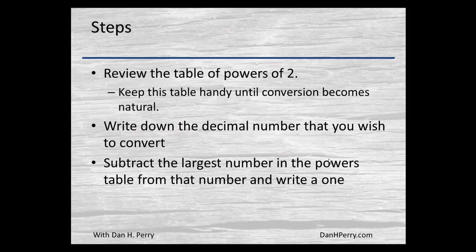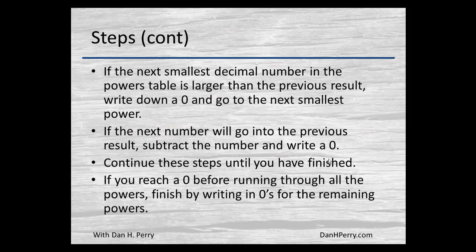Write down the decimal number you would like to convert. Take the largest number in that powers of 2 table that is still smaller than the number you're converting. Write it down and do a subtraction. Then do the same thing. If the next smallest number—say it was 64 and the next number down is 32—if the remainder is less than 32, you won't be able to subtract that out.